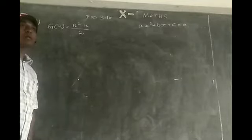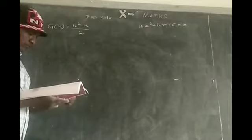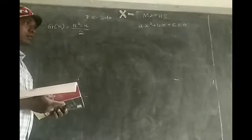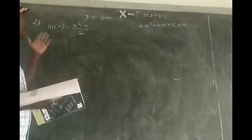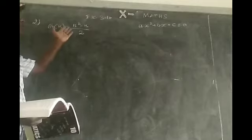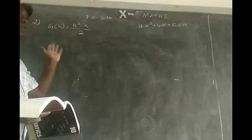So for the volleyball games, there are 15 games. When you start the schedule, the schedule will be formed. g of n is equal to n square minus n by 2. There are 15 games.